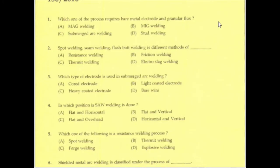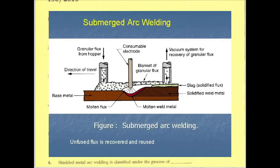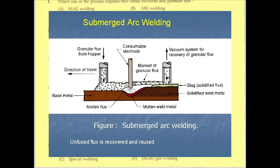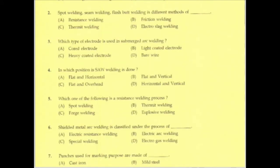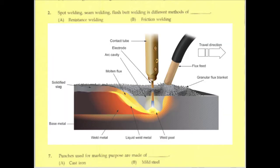Which type of electrode is used in submerged arc welding? As seen in the first two questions, the answer is bare metal electrode, that is a bare wire electrode. Submerged arc welding is done in the flat and horizontal position.